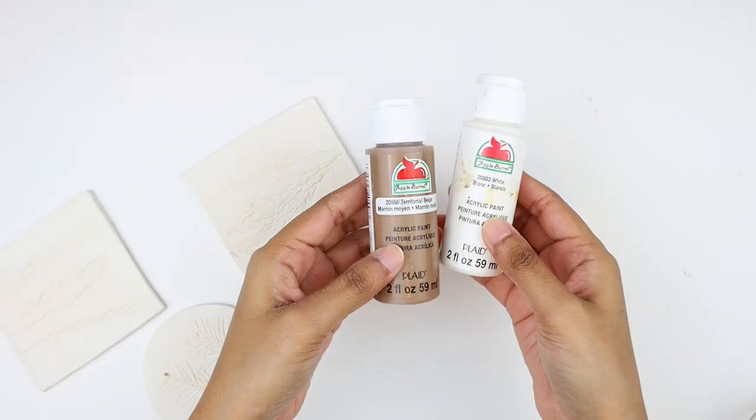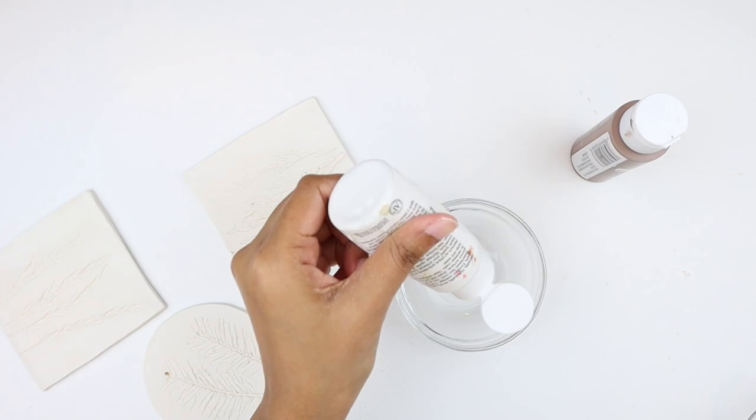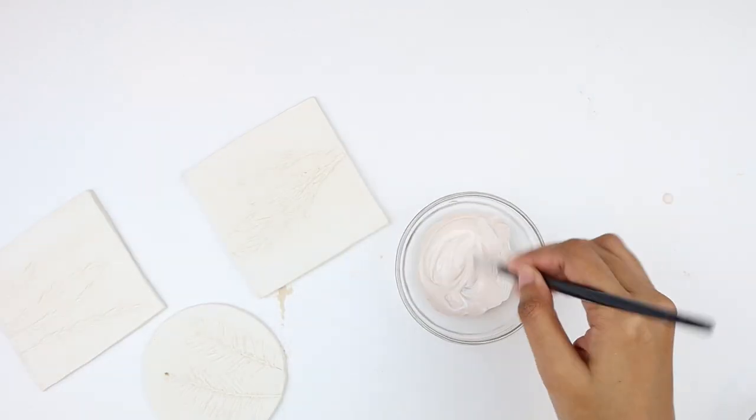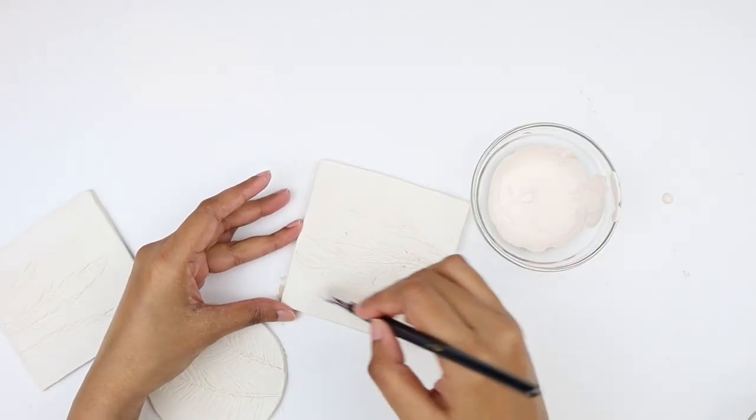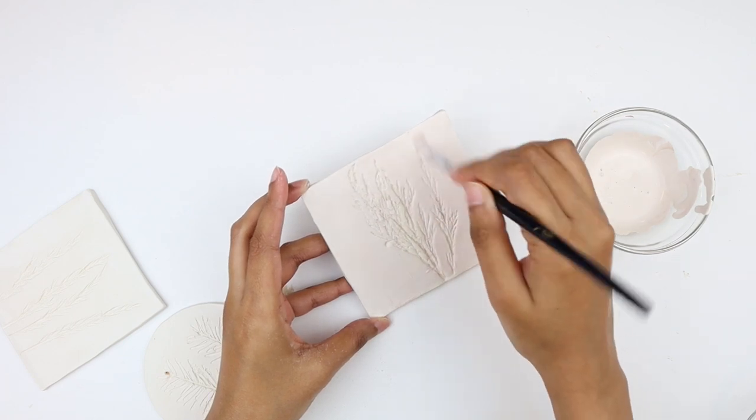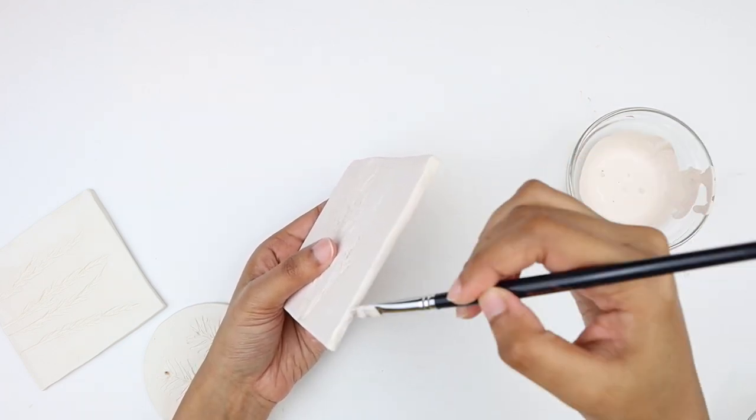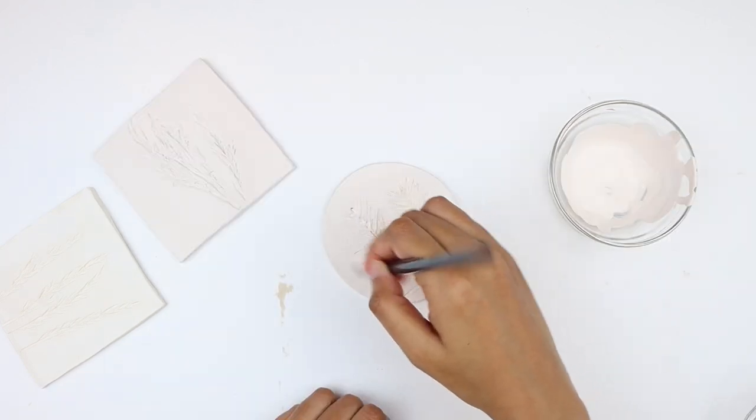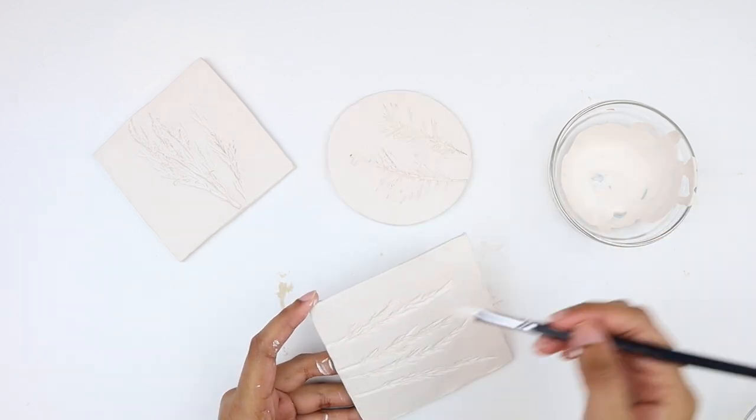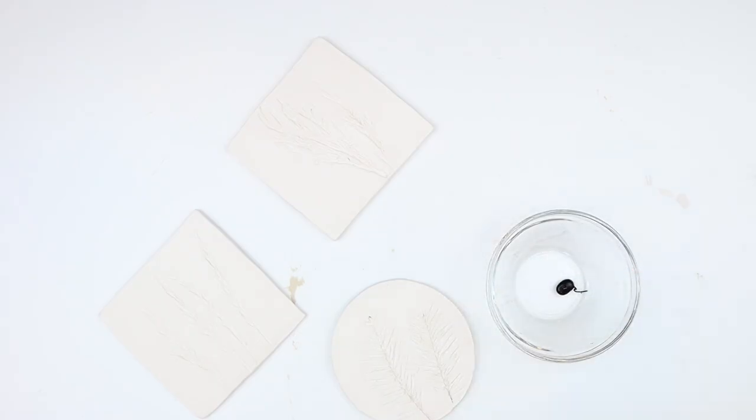To paint them, I mixed a little amount of beige acrylic paint with white and started applying the paint on all three pieces. You also want to paint the sides. I applied two coats of paint on the pieces and made sure there's enough drying time between the coats.